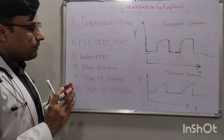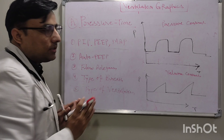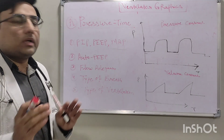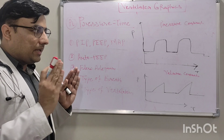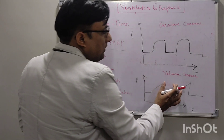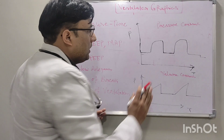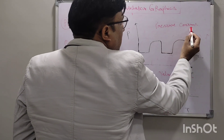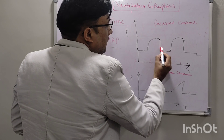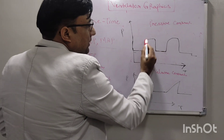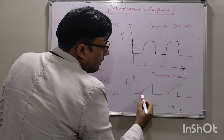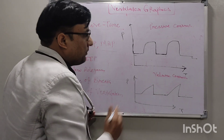In the pressure-time curve, we can also see the type of ventilation — whether it is pressure control or volume control. In newborn babies or in the NICU, we generally practice pressure control, but we can differentiate by the shape of the pressure-time curve. In pressure control ventilation, the shape of the pressure-time curve will be rectangular. In volume control, it will be triangular or fin-shaped.